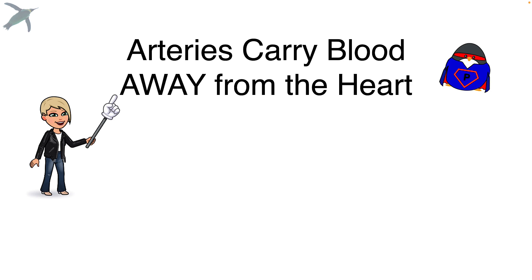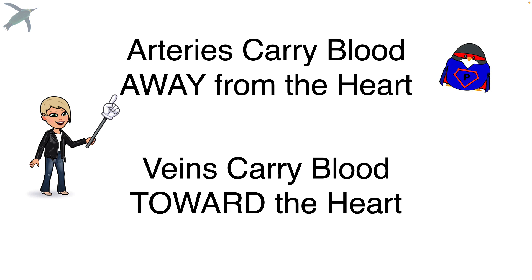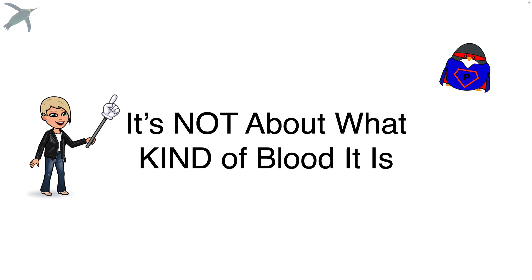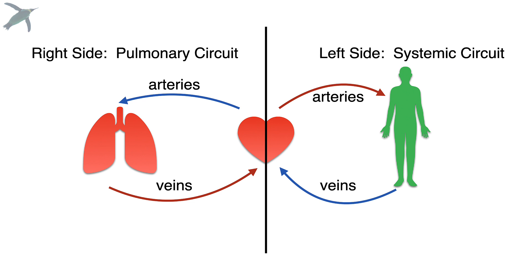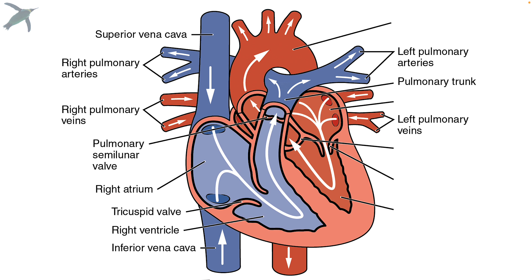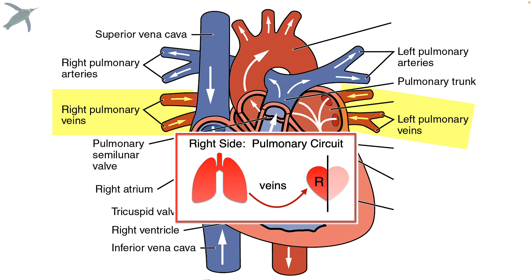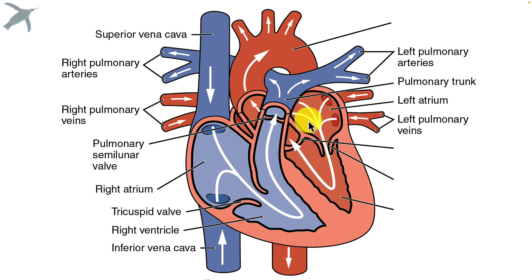Arteries carry blood away from the heart; veins carry blood toward the heart. The distinction between the two is not about what kind of blood it is, but about the direction the blood is moving. So the blood will pick up oxygen in the lungs, deliver carbon dioxide, and return to the heart. Now it is red and returns via the right and left pulmonary veins. The blood will then enter the left atrium and pass through the bicuspid, sometimes called the mitral valve.